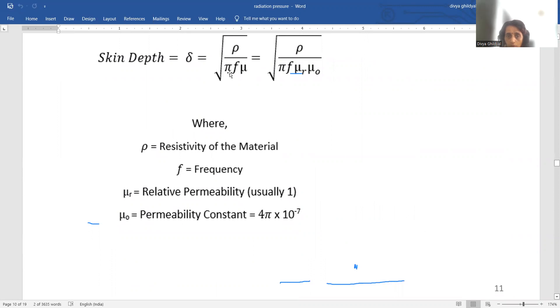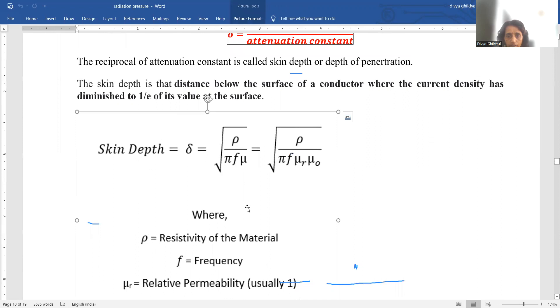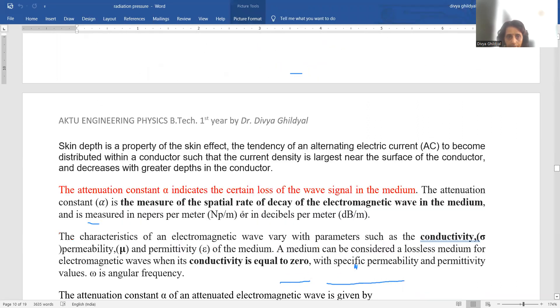So skin depth mathematically is given by under root rho where rho is resistivity of the material, pi 3.14, frequency and mu, mu which could also be taken as a multiple of relative permeability and permeability constant. Numerical is asked on this formula at times.